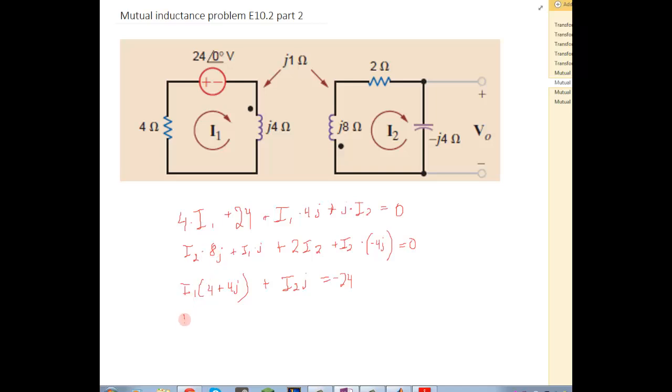Now for the second line, we have I1 times J plus I2 times 2 plus 4J equals 0. So here we have a 2 by 2 matrix and the 1 by 2 matrix that we can use to solve.